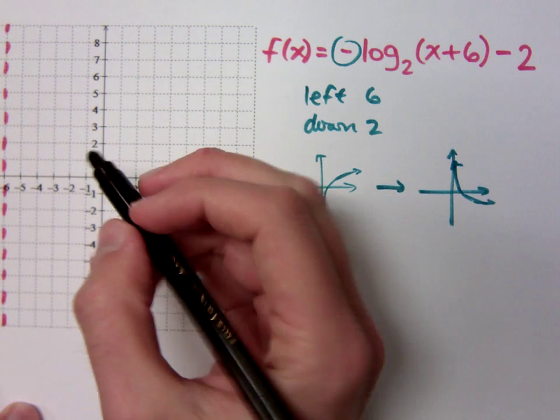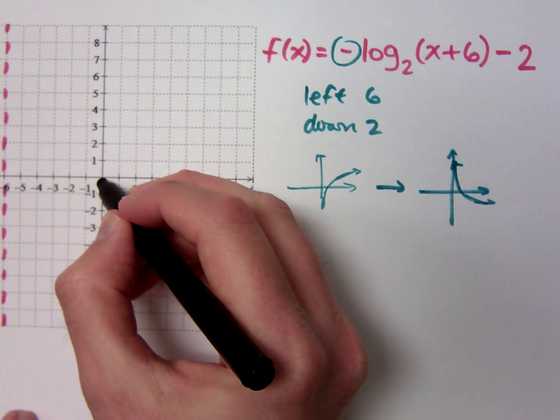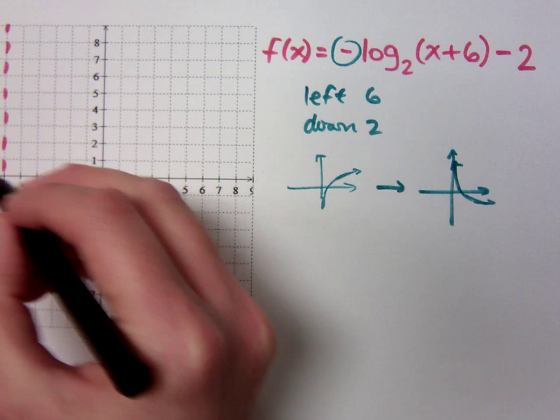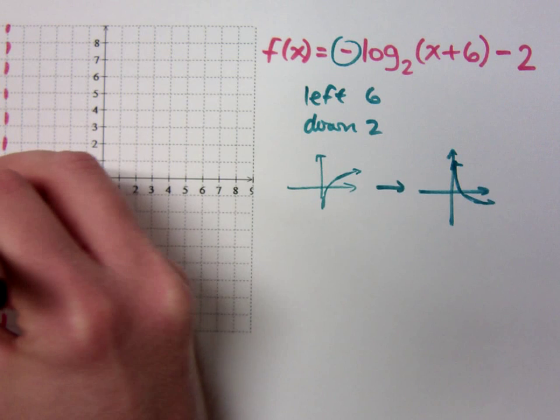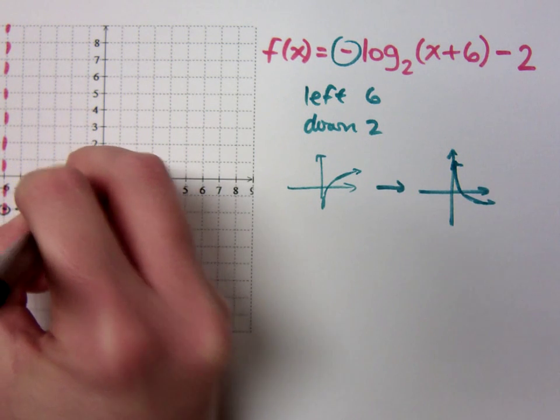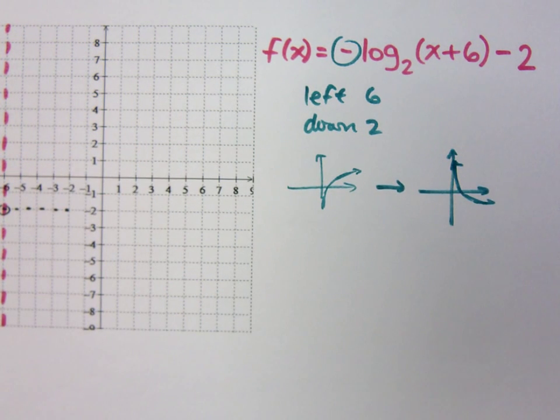That means that my graph is going to be on the right side of this guy. Now, your origin was right here where we were basing those points off. Where did I move that? Negative six. Left six and down two. So my new origin is right here. If you want to draw some little crosshairs, just to get an idea about where things are.